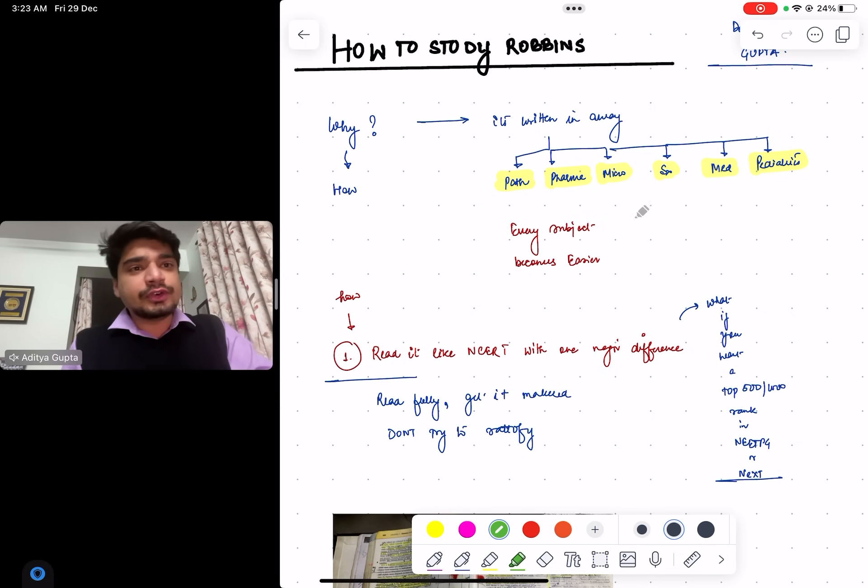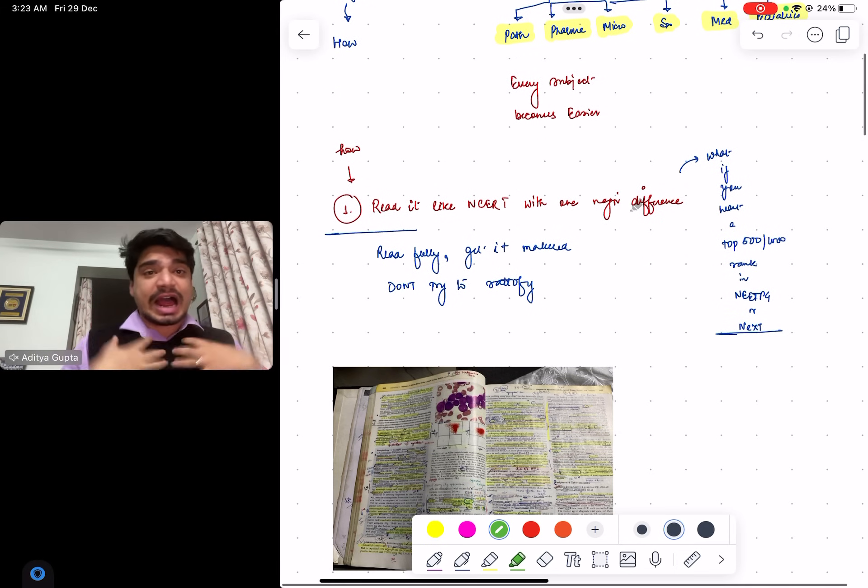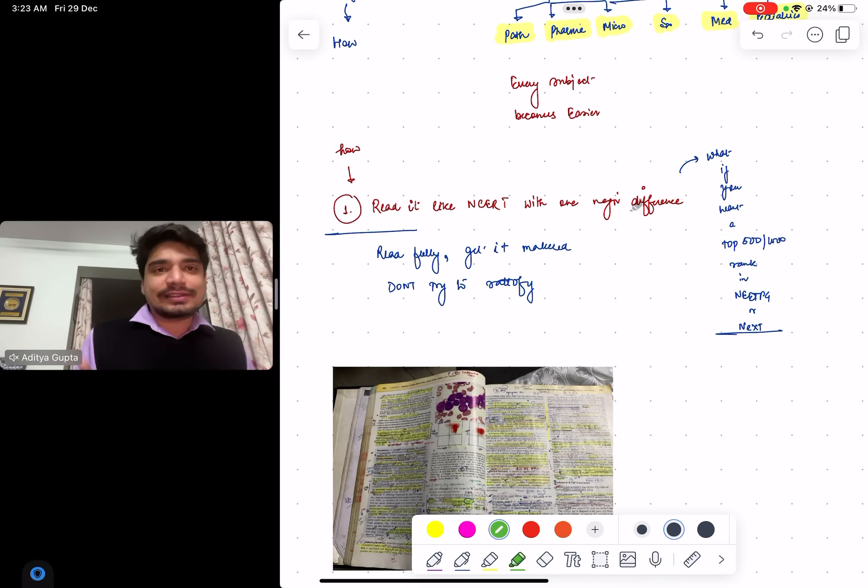Let's begin the discussion. First is how do you read it. The first method is what I followed: read it like NCERT. This is one major difference. Anyone who aspires to get a top 500 rank in NEET PG, this is the method you have to choose. If your goal is a thousand, two thousand, three thousand rank, then fair enough, you can watch the video further.